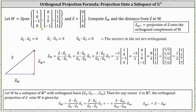Because we have three vectors in this set, we have a sum of three scalar multiples involving vectors u1 through u3. So to begin, we have vector x dotted with vector u1, divided by vector u1 dot vector u1, times vector u1.